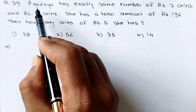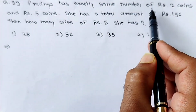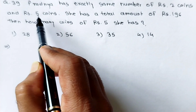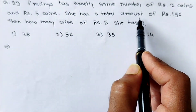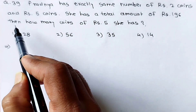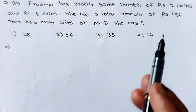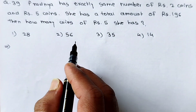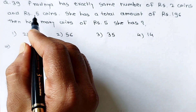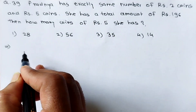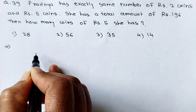See question number 39: Pradhania has exactly the same number of rupees 2 coins and rupees 5 coins. She has a total amount of rupees 196. Then how many coins of rupees 5 does she have? Since the number of coins of rupees 2 and rupees 5 are the same, let the number of coins be x.